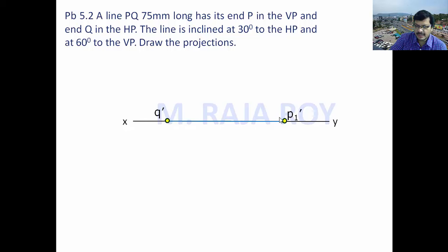So, this is Q' and P1'. I will keep both the ends in HP and VP. That's why front view I will get somewhere here and top view also I will get at the same place.